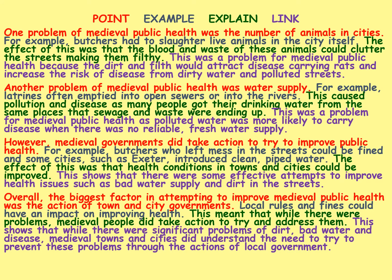Now the conclusion: 'Overall the biggest factor in attempting to improve medieval public health was the action of town and city governments. Local rules and fines could have an impact on improving health, and this meant that while there were problems, medieval people did take action to try and address them. This shows that while there were significant problems of dirt, bad water, and disease, medieval towns and cities did understand the need to try and prevent these problems through the actions of local government.' There are various different explanations and conclusions you could have given. It took me about 10 minutes to type up, but remember you have up to around 20 minutes to write your answer.